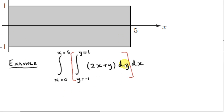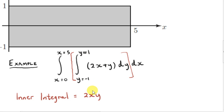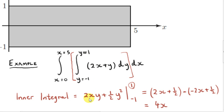To solve this problem, we start with the inner integral. We have to integrate 2x plus y with respect to y from y equals minus 1 to y equals plus 1. We treat x as a constant. Integrating 2x with respect to y gives 2x times y, since 2x is a constant. Integrating y with respect to y gives a half y squared. We plug the upper limit in for y: 2x plus a half times 1 squared, that's 2x plus a half.